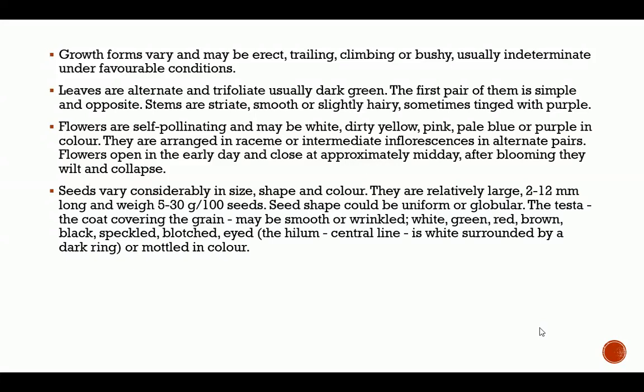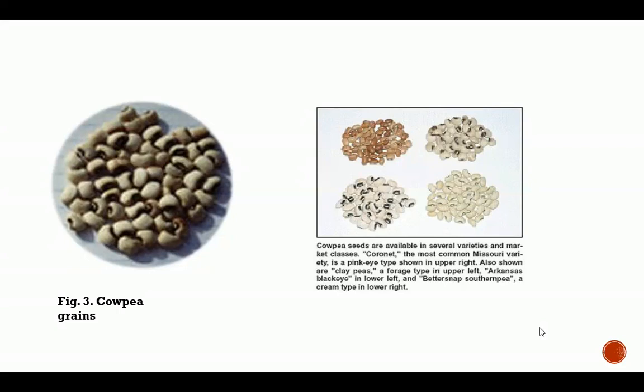The hilum central line is white surrounded by a dark ring — that is what is meant by 'eyed' — or the seeds may be mottled in colour. Shown here are examples of cowpea grains, including the Ife Brown variety. We also have the different white varieties and the ones commonly called iron beans, which you will find most often in Nigerian markets.